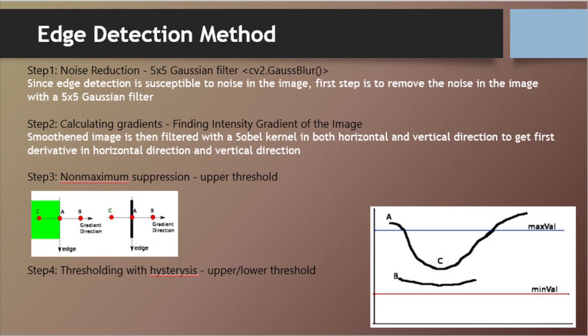To get a precise edge detection image, we need to follow 4 steps. Step 1: noise reduction by a 5x5 Gaussian filter. Step 2: calculating gradients to find the intensity gradient of the image.